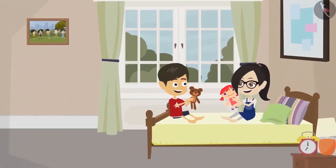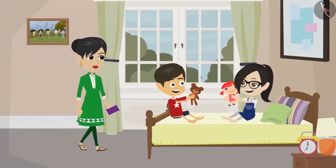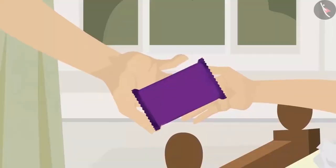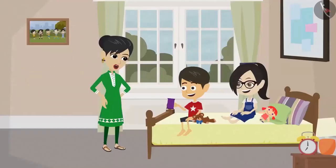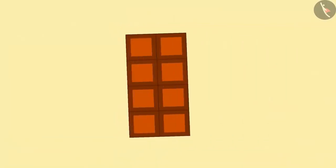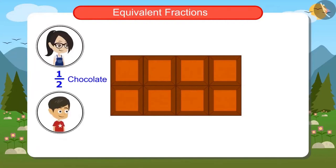Rayamsh and Vandana are playing at Vandana's house today. Mummy brought a chocolate for both of them. She says: I brought a chocolate for both of you. You both should share and eat it. Vandana, you should eat one half of it. And Rayamsh, you eat two fourths of it.